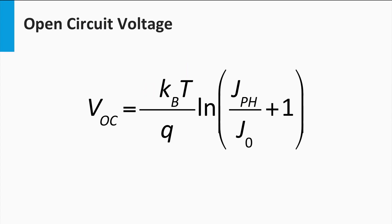The equation shows that the open circuit voltage depends on several parameters. First, if the photocurrent density is increased, the open circuit voltage increases as well. This means that by increasing the irradiance — in other words, by shining more light on the solar cell — the open circuit voltage can be increased.